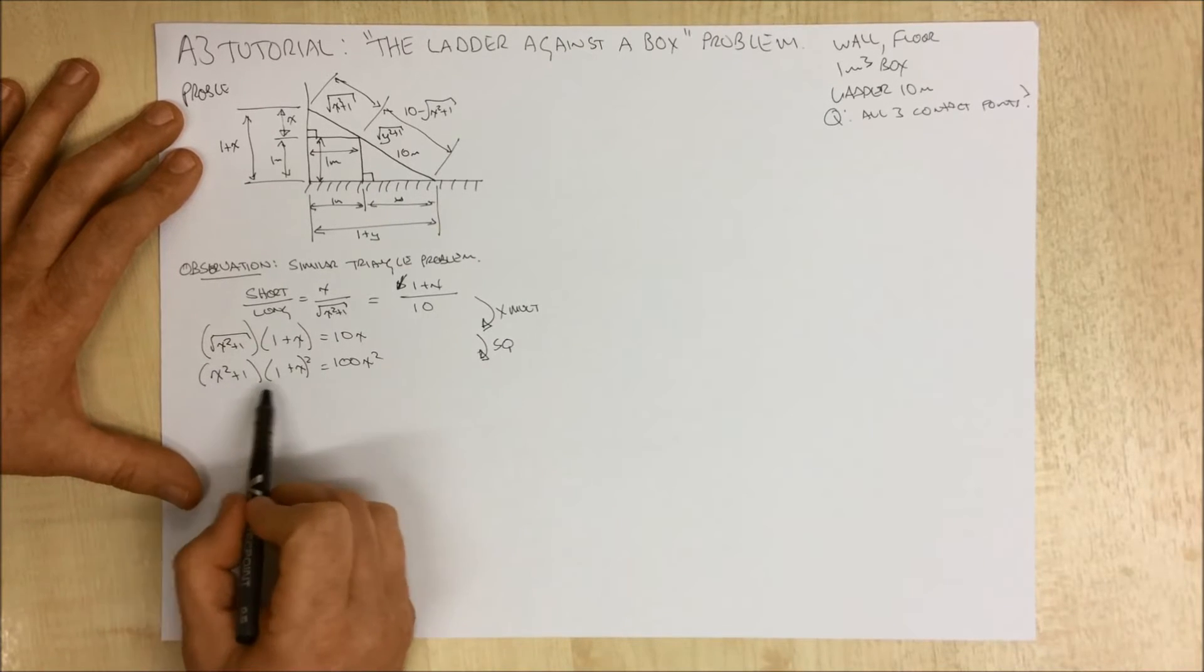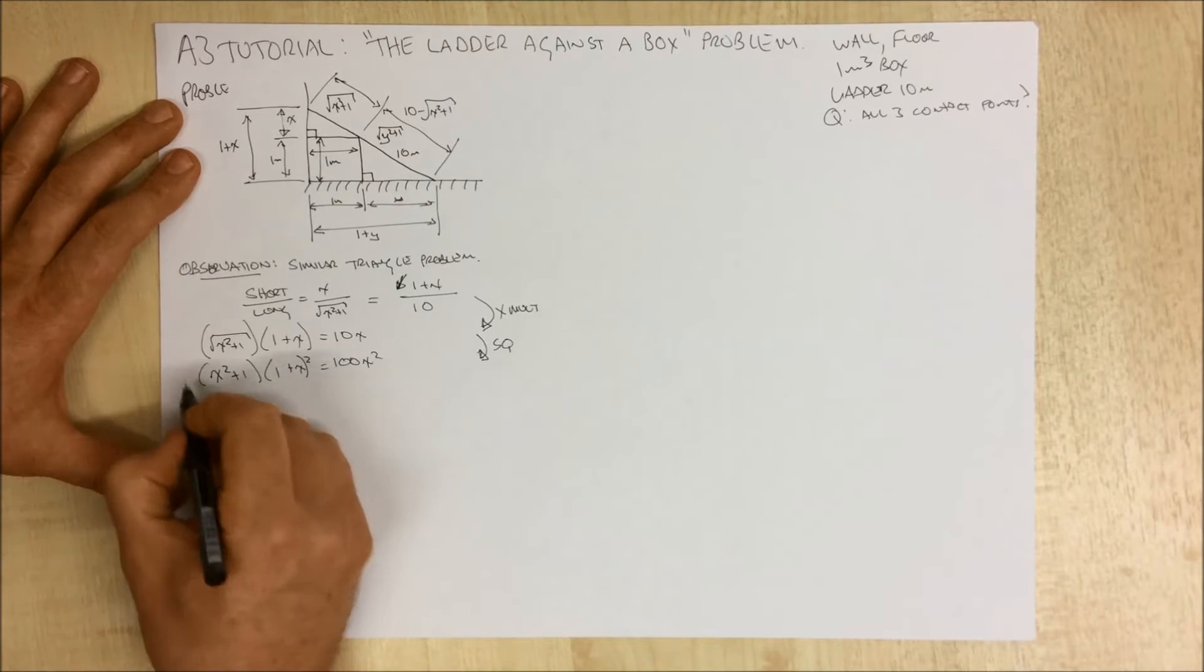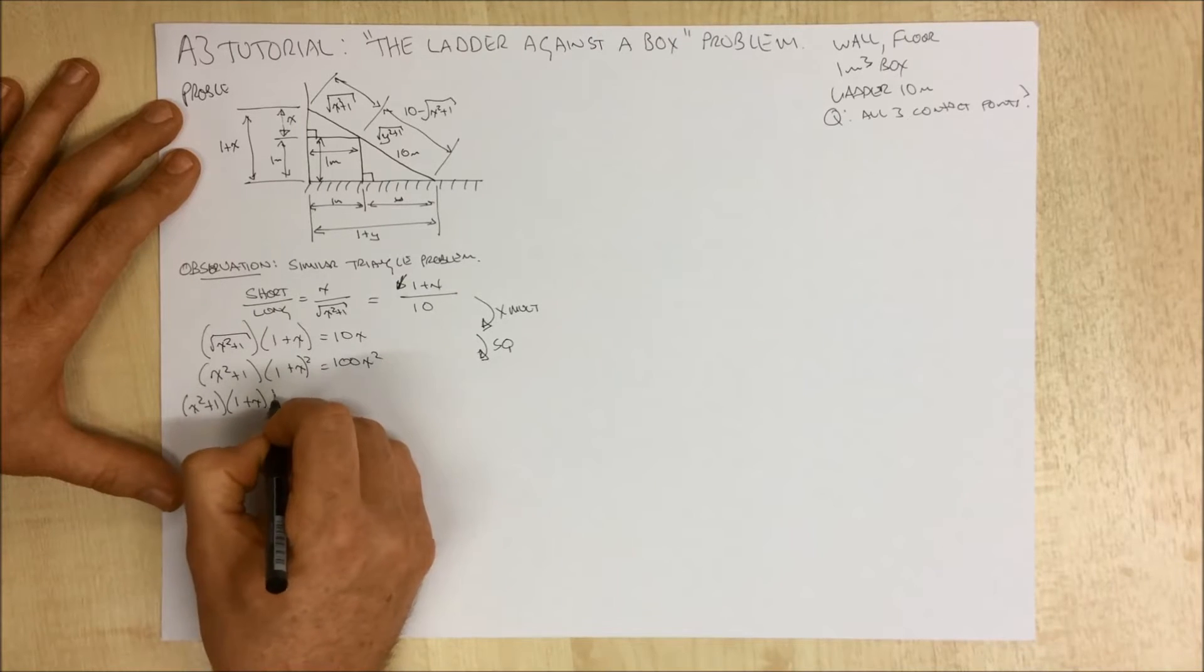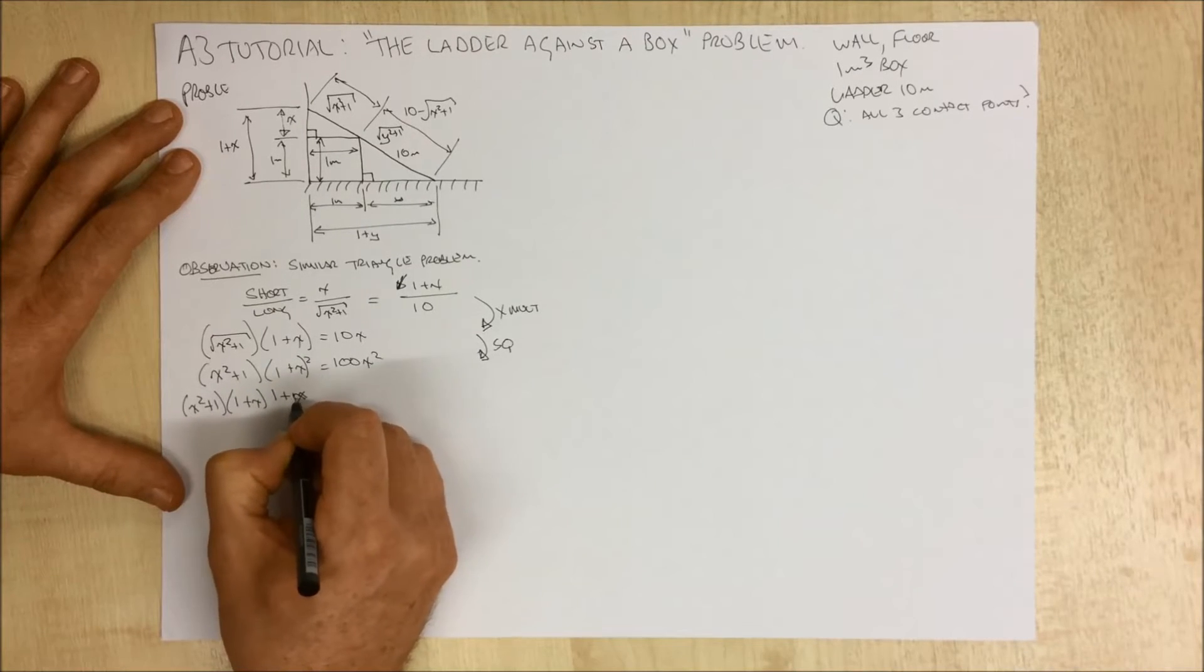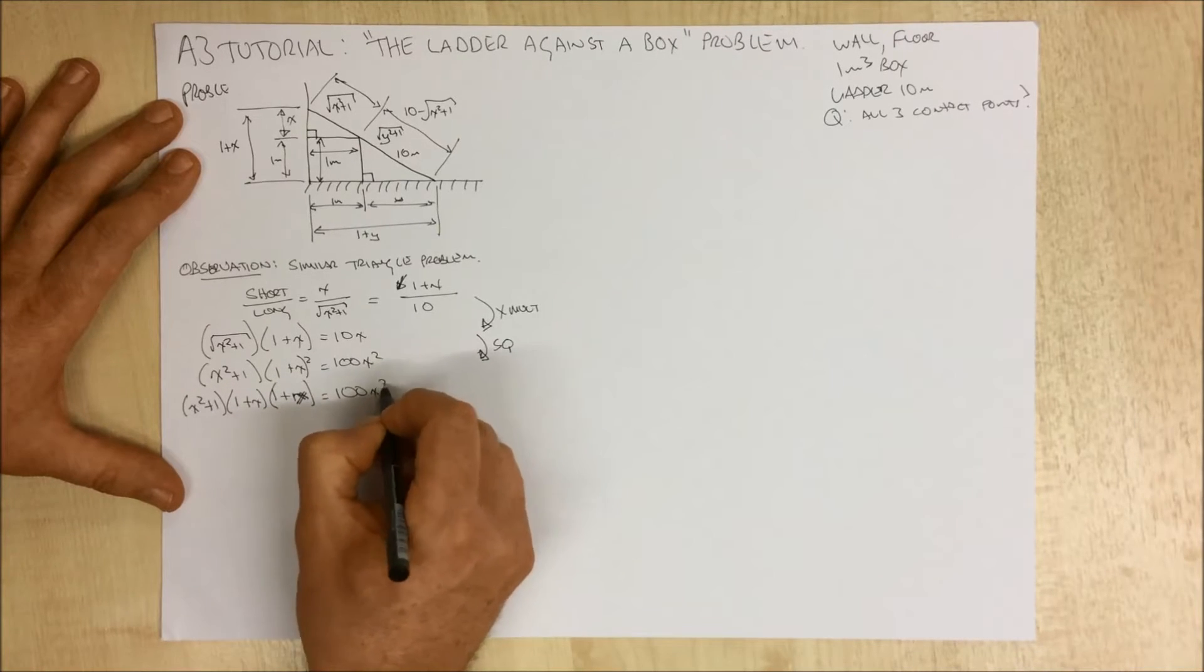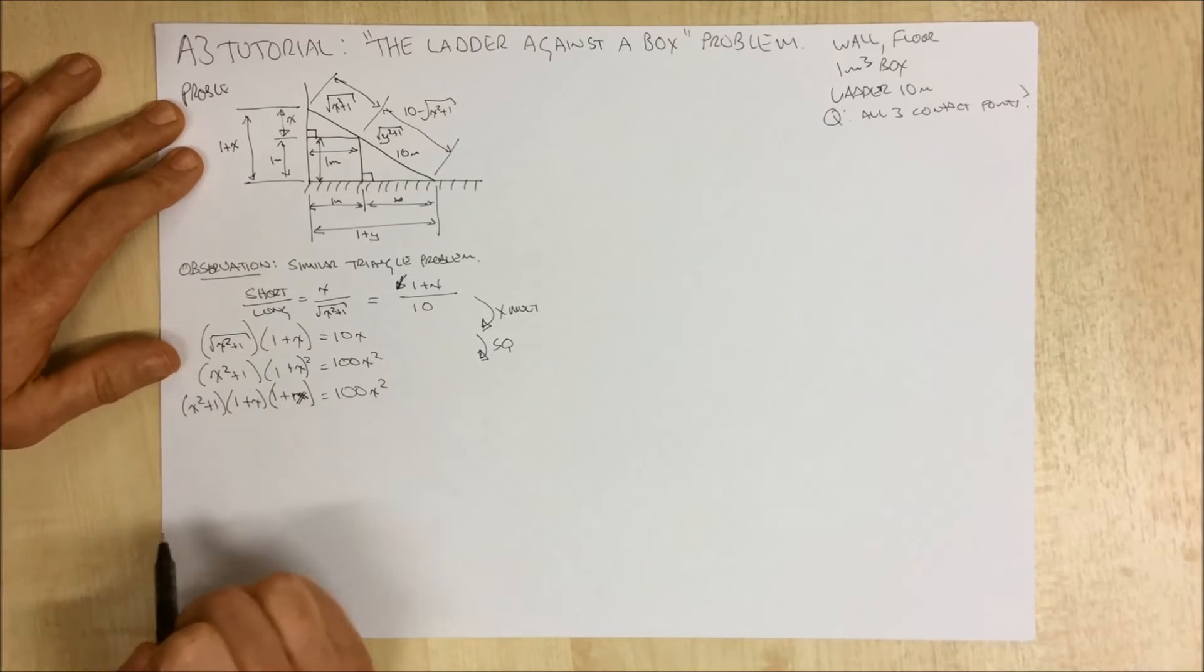And now if we look at this here, the next thing I'm going to do is expand this out. I'm going to take it quite slowly. So x squared plus 1 gives us 1 plus x times 1 plus x equals 100x squared.